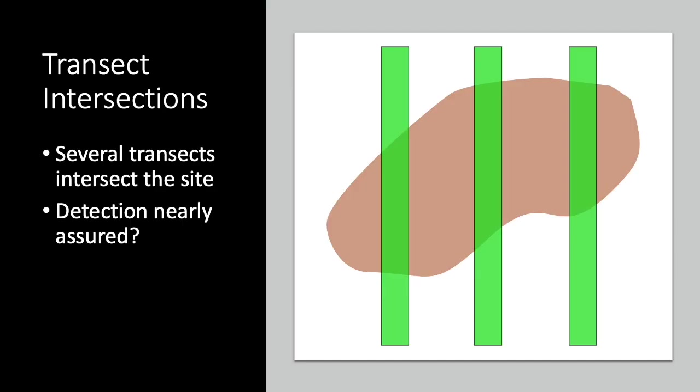For example, when a site is large relative to the transect spacing, no matter what the site's shape, it's guaranteed that the transects will intersect the site at least once, and the probability of detecting the site is relatively high.